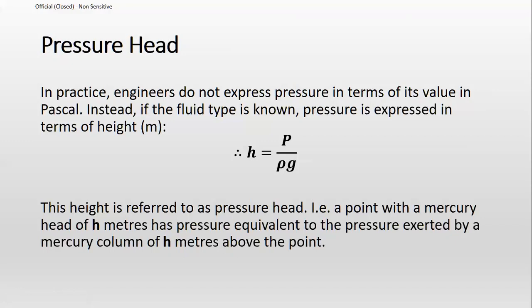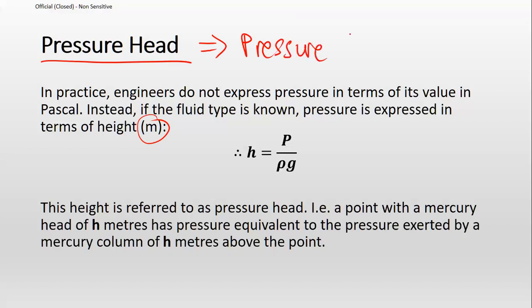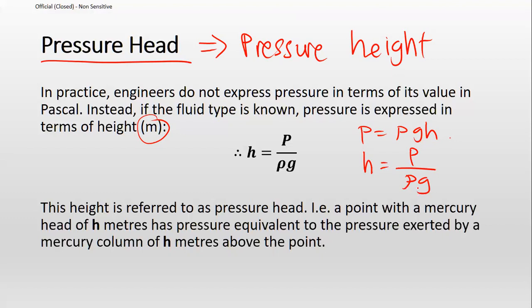In the industry, we seldom express pressure as a direct value like bar or kilopascal. Instead, we usually relate pressure as a form of head, with units in meters — sometimes called pressure height. We derive this from P = ρgh by rearranging: H = P / (ρg). We associate the pressure with height.